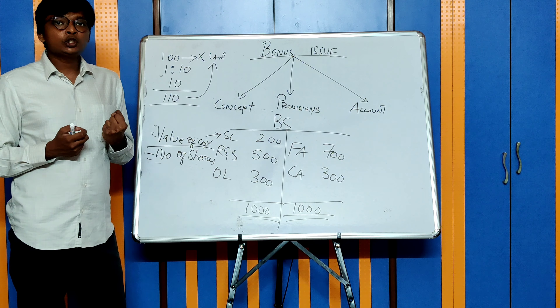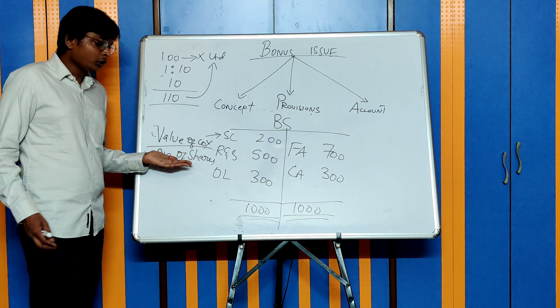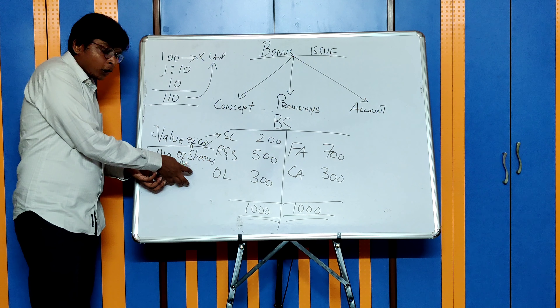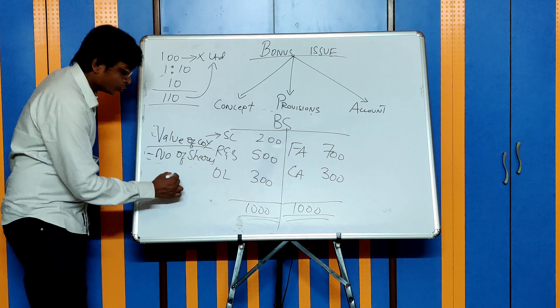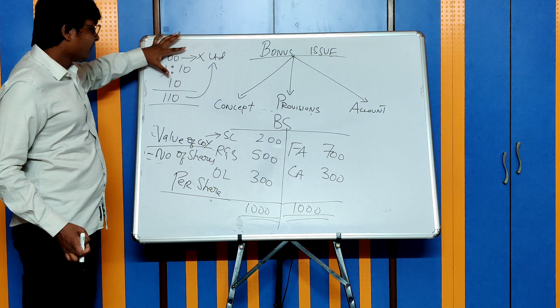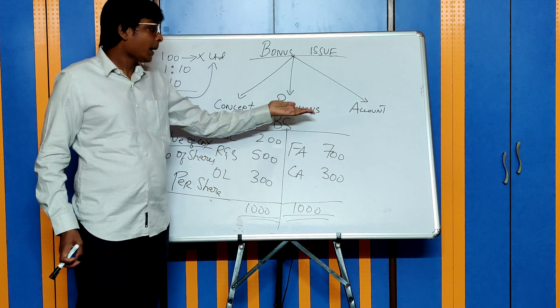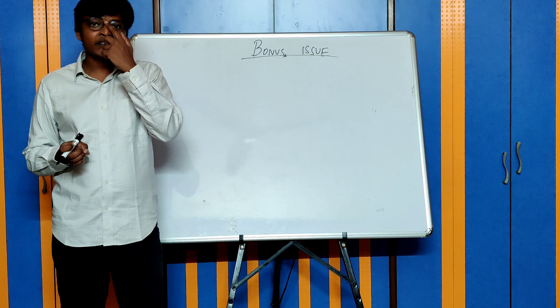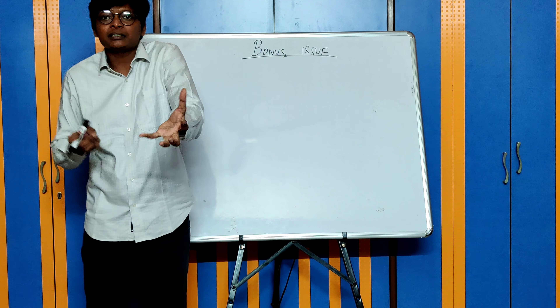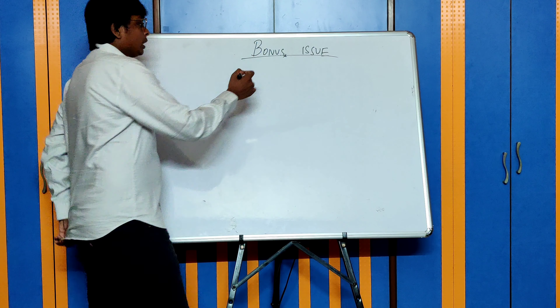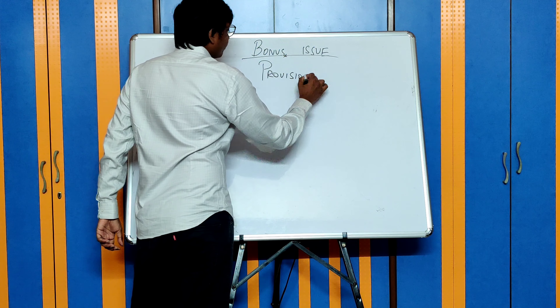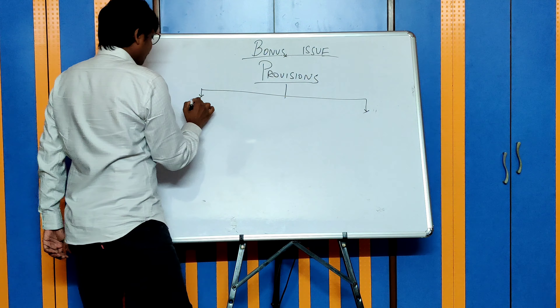After issuing bonus shares — you had 100 shares before bonus issue, after bonus issue you have 110 shares. What will happen to the market price of your share? Market price of a share is computed as value of the company divided by number of shares. When a company issues bonus shares, the value of the company will remain the same because there is no inflow of cash; however, the number of shares is increasing. With the numerator being the same and the denominator increasing, the value per share will theoretically fall. This is the concept of bonus issue and why a company goes for a bonus issue.